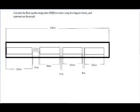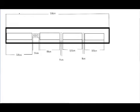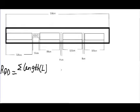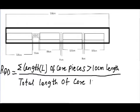So in order to calculate the rock quality designation, we're going to use the following formula. The formula is RQD equals sum of length of core pieces greater than 10 cm length over total length of core interval times 100%.